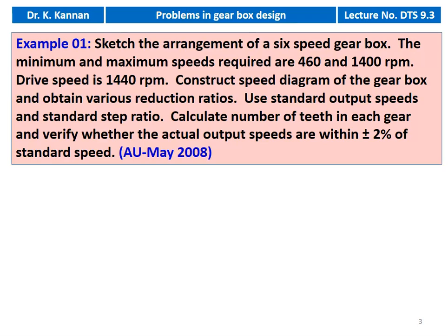The first example is from the May 2008 question paper. In this lecture, we are going to discuss the six-speed gearbox and will solve two problems on it. Sketch the arrangement of a six-speed gearbox where the minimum and maximum speeds required are 460 and 1400 RPM, drive speed is 1440 RPM. Construct the speed diagram of the gearbox, obtain various reduction ratios, use standard output speed and standard step ratio, calculate the number of teeth in each gear, and verify whether the actual output speeds are within plus or minus 2 percent of the standard speed.